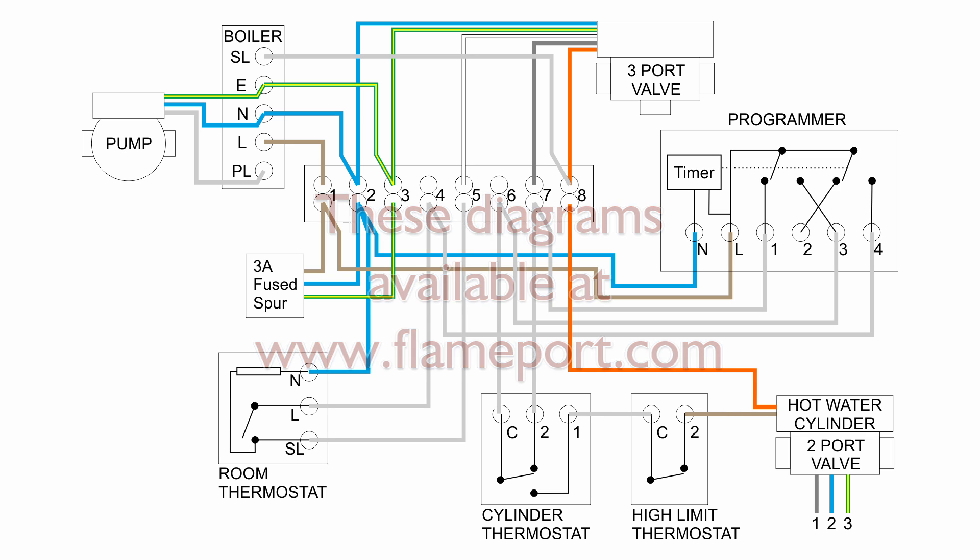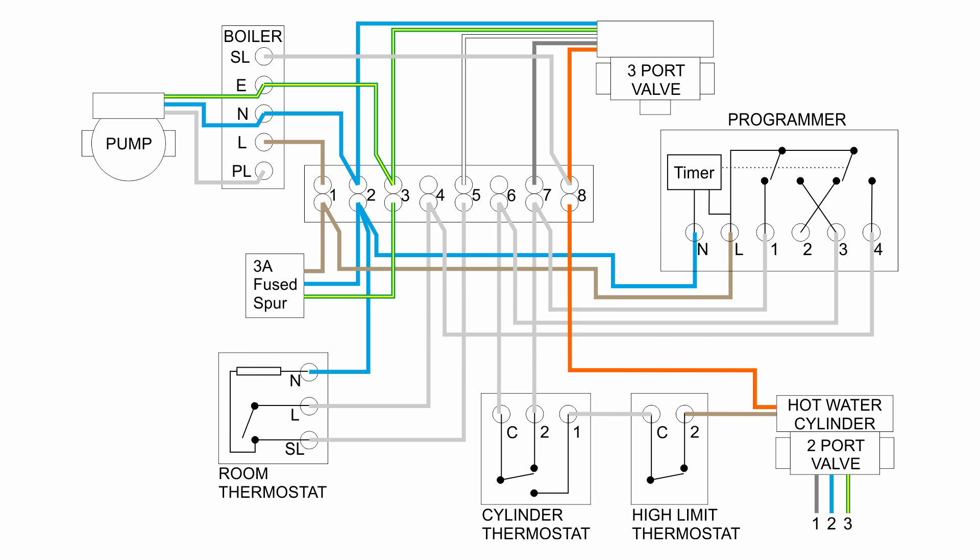So in terms of the actual wiring, the link there between the cylinder thermostat and the high limit thermostat is usually just a wire link between the two appropriate terminals, and then you're just using the output wires as we've got there. So the incoming there on the C and 2 on the cylinder thermostat, and then your output is 2 on the high limit thermostat. So although they're set out there, they are generally combined into a single device.